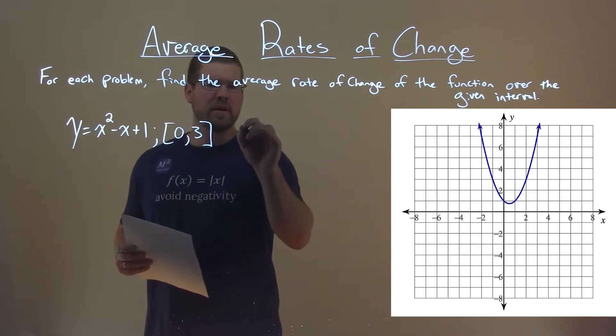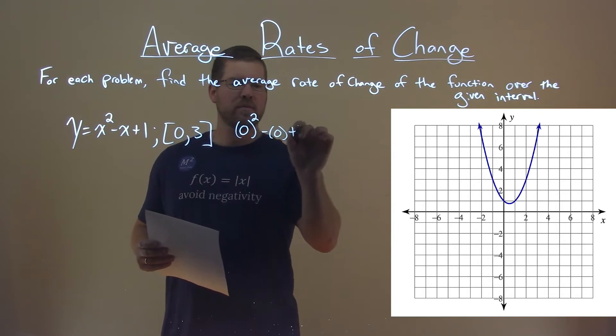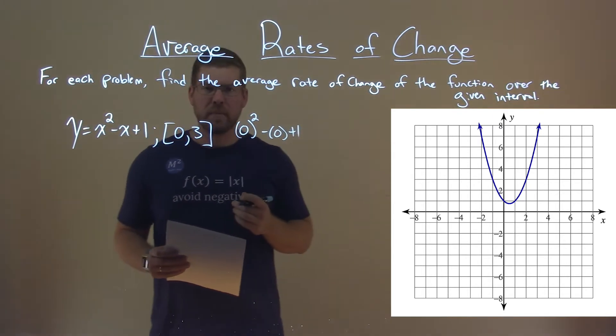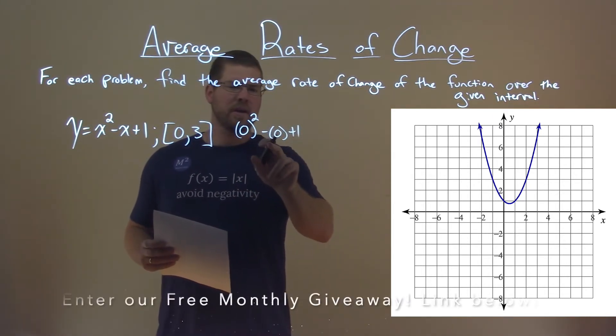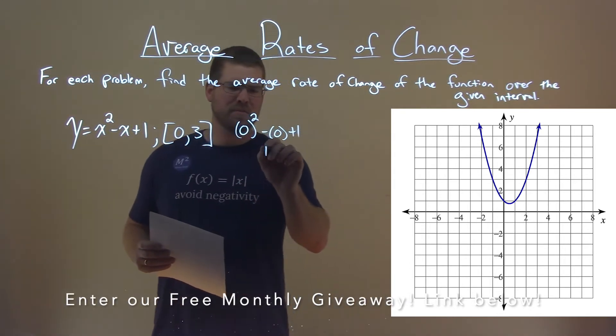Let's plug 0 into our equation. 0 squared minus 0 plus 1. What does that come out to be? Well, 0 squared is 0, minus 0 is 0, and just 1.